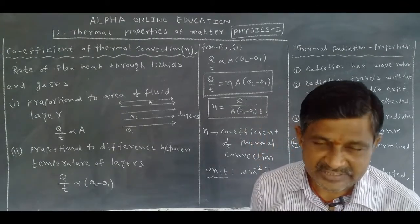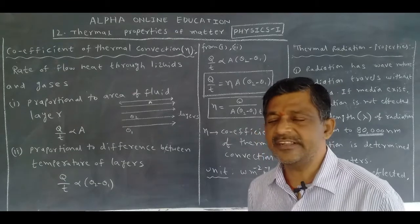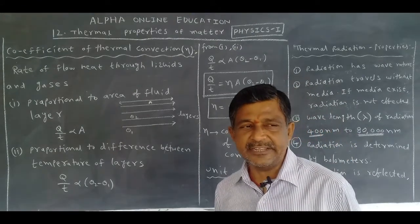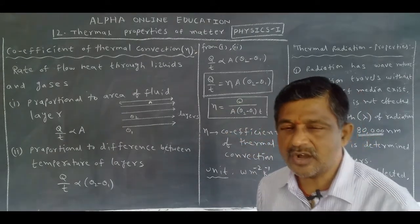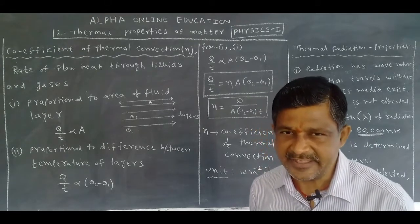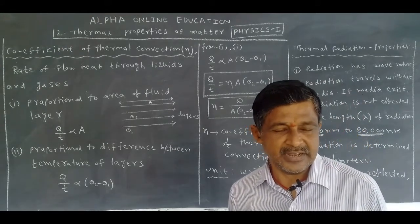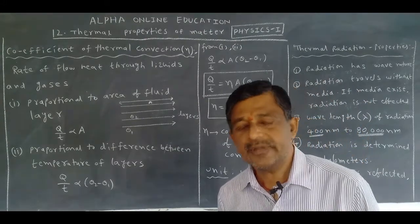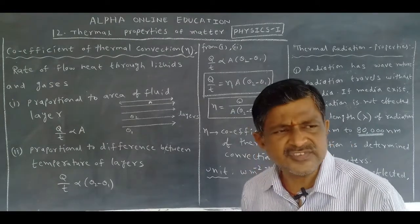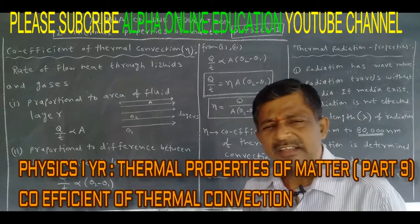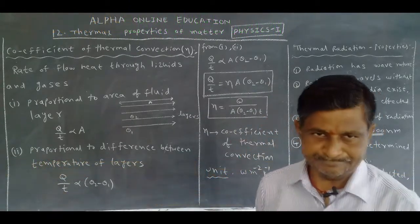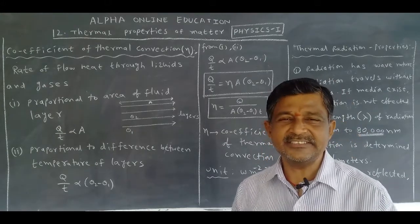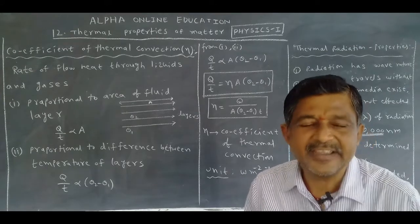Thermal radiation is the transfer of heat from high temperature to low temperature without the intervention of any medium. For example, the Earth receives energy from the Sun. From the Sun we get both light energy and heat energy, and that heat energy is called thermal radiation.